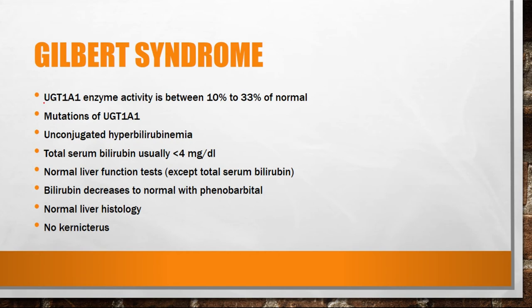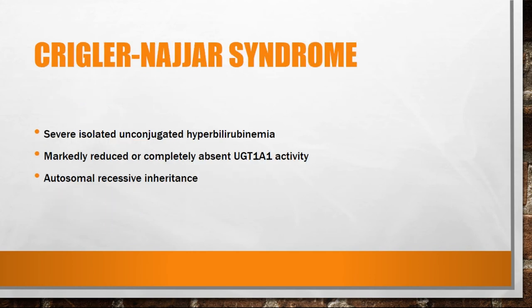Under inherited causes, we have Gilbert syndrome, where the function of UGT1A1 enzyme is decreased to 10 to 33 percent of normal. This is due to a mutation in the UGT1A1 gene. There is an increase in unconjugated bilirubin — unconjugated hyperbilirubinemia. The total serum bilirubin is usually less than 4 mg/dL, liver function tests are normal, bilirubin levels decrease to normal with phenobarbital, and there is normal liver histology with no chronic changes.